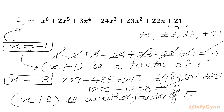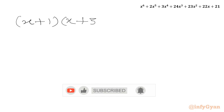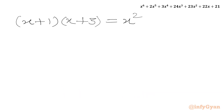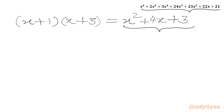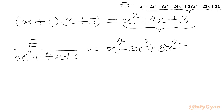Now we will multiply both factors. x plus 1 times x plus 3 equals x squared plus 4x plus 3. Now we have a degree 2 polynomial and a degree 6 expression. We can divide expression e by x squared plus 4x plus 3, and after long division we get x to the power 4 minus 2x cubed plus 8x squared minus 2x plus 7.